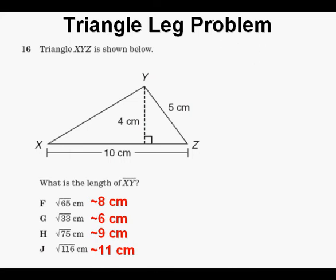We need to figure the length of this line segment, now highlighted in red, XY. Based on the numbers calculated, J at 11 cm is definitely too big for segment XY, so we can cross it off.